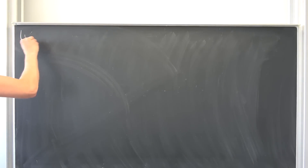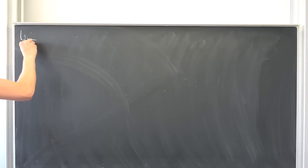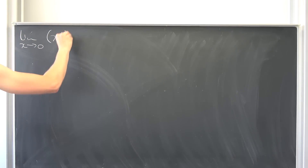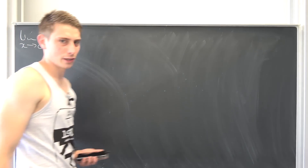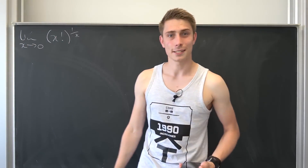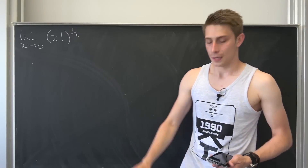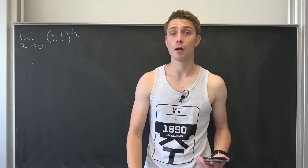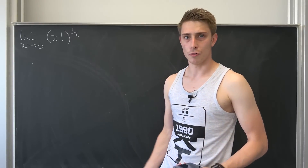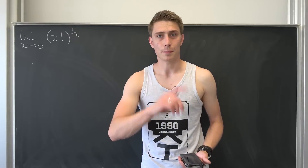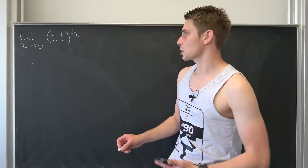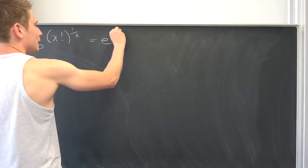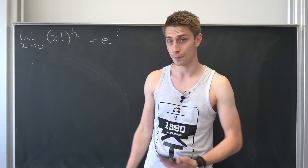We are going to take a look at the limit as x approaches 0 of x factorial to the 1/x power. This in itself already looks quite good. OP said this is going to go to a very nice limit — and it actually goes to e to the negative Euler–Mascheroni constant.